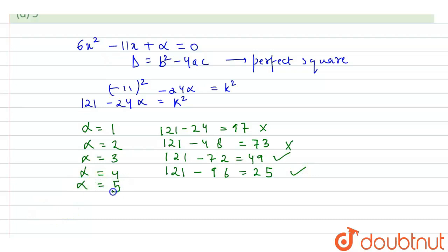Now alpha equals 5. If we take, we get 121 minus 120 which equals 1, and 1 is also a perfect square. So this value is also accepted. So we see that alpha equals 3, alpha equals 4, and alpha equals 5 are the accepted values.